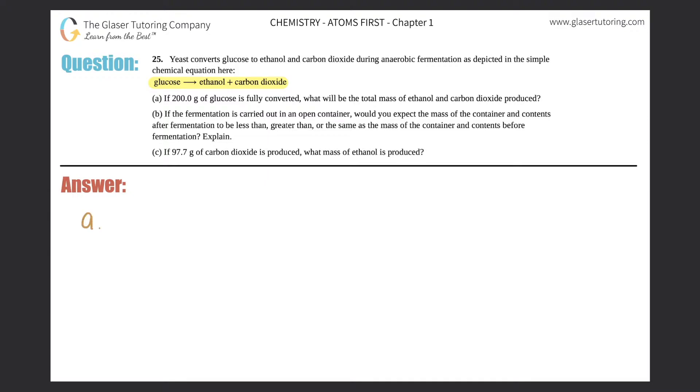A, B, and C. Let's see, for letter A it says if 200 grams of glucose is fully converted, what will be the total mass of ethanol and carbon dioxide produced? So let's just write this down. I'm going to say glucose yields ethanol plus CO2, and we know that CO2 is carbon dioxide.